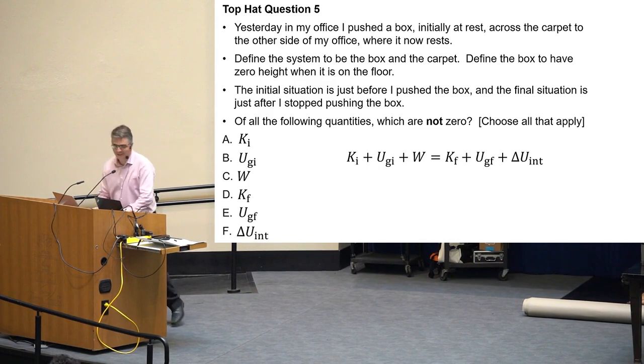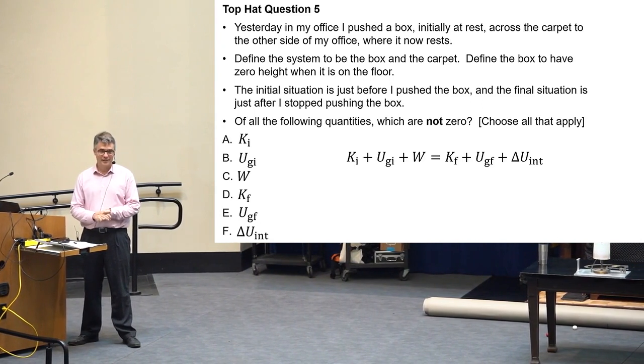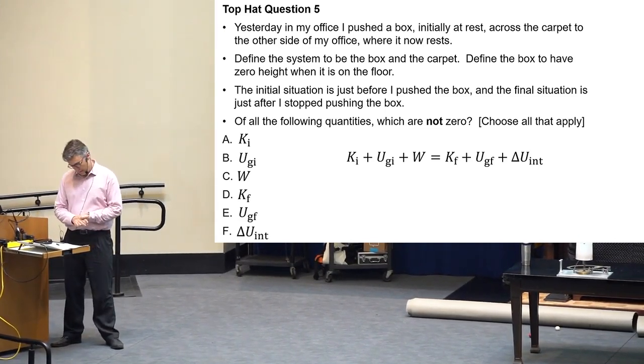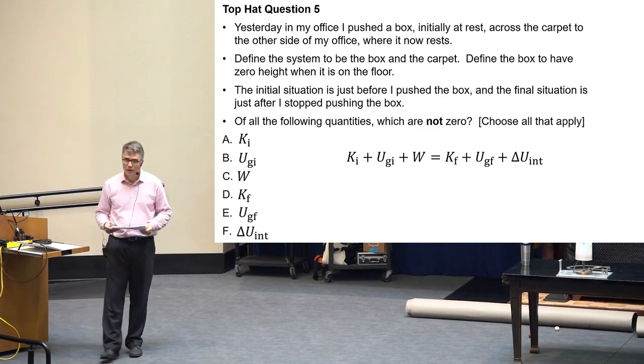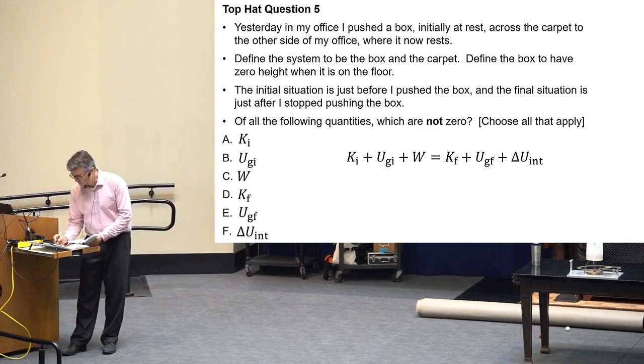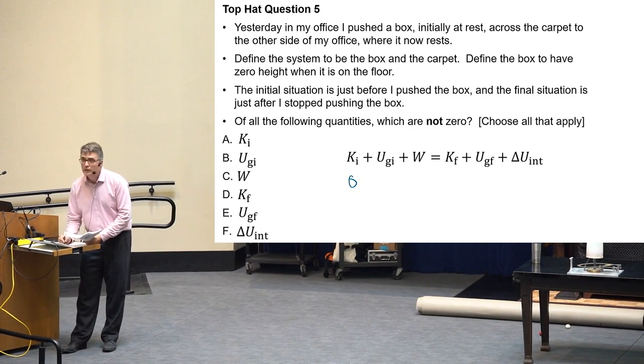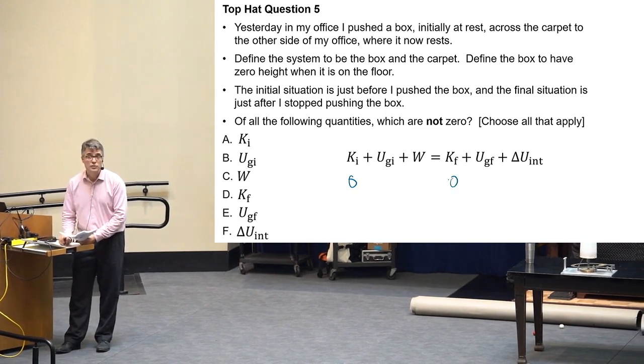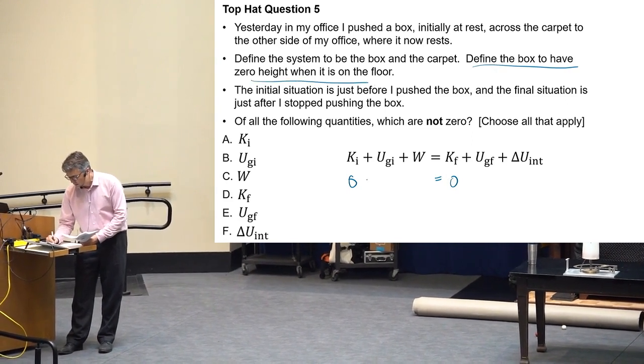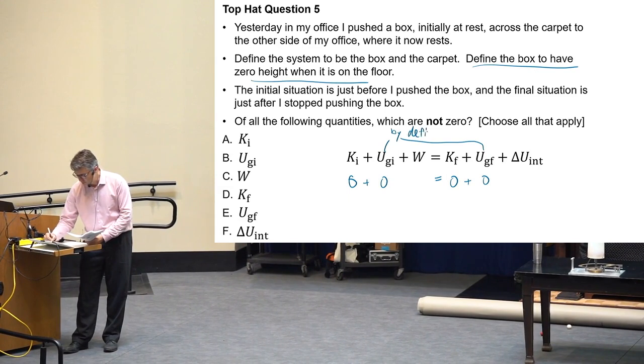Once again, initial it starts at rest, then I push it across the floor, and then it stops. Final is it's at rest. And I define the system now to include the carpet, the floor, and the box. So I'm hoping you're able to select more than one. You're not. Oh dear. That's third top hat glitch of the day I think. It's possible that this top hat is not working in which case you can choose any of the things you think are not zero. I would like you to choose two but if it's not working that's fine.